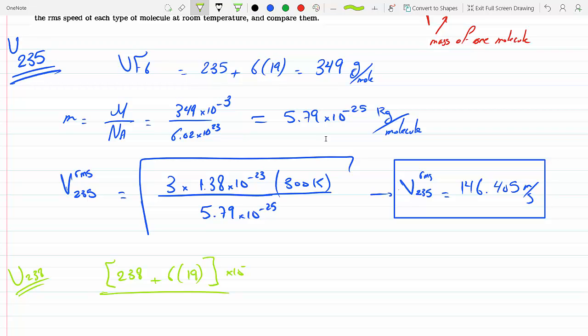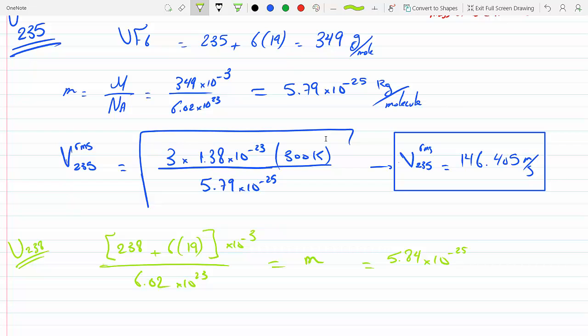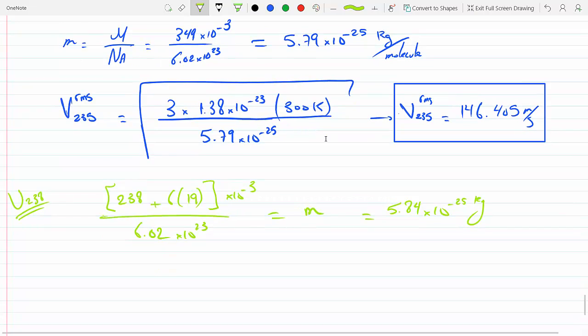6.02 times 10 to the 23. This would give me M, which turns out to be 5.84 times 10 to the minus 25 kilograms, and I plug it back into the same formula.